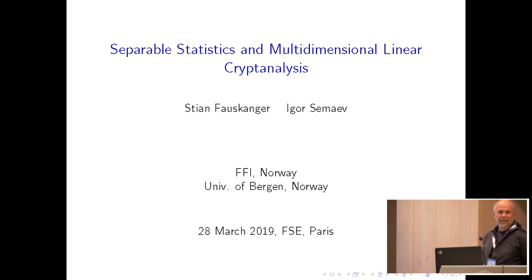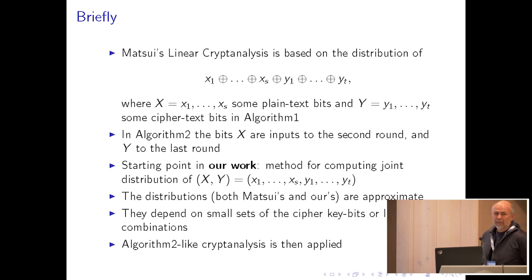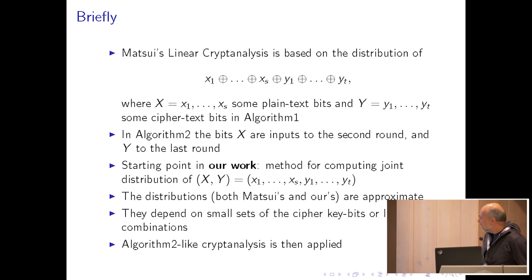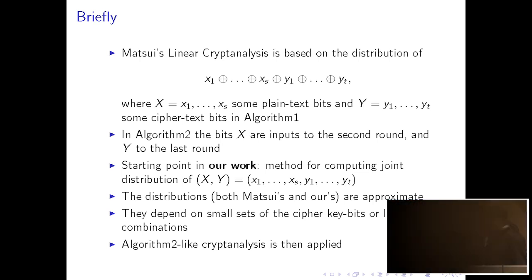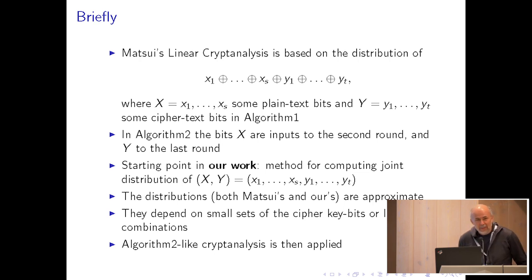I'm quite grateful to the previous speaker for introducing linear cryptanalysis and differential structure. Matsui's linear cryptanalysis is based on the distribution of XOR of plaintext bits X1...XS and ciphertext bits Y1...YT. In Algorithm 2, bits X are input to the second round of the encryption and Y inputs to the last round. We managed to find a method to compute the joint distribution of X and Y, that is a vectorial random variable, and this was the starting point of our work.